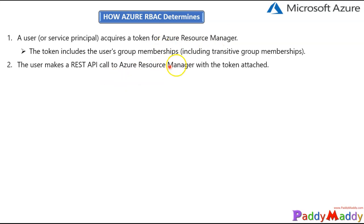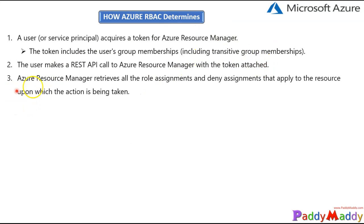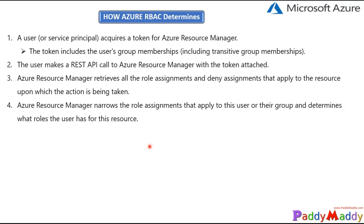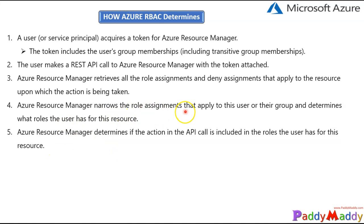That's ARM — the user is acquiring a token to Resource Manager and making a REST API call to Azure Resource Manager with the token attached. ARM will then retrieve all the role assignment list, including whether there is a DENY assignment or what kind of actions will be performed. Next, ARM narrows the role assignments further to determine what roles the user has for that specific resource — whether they are a contributor, reader, etc.